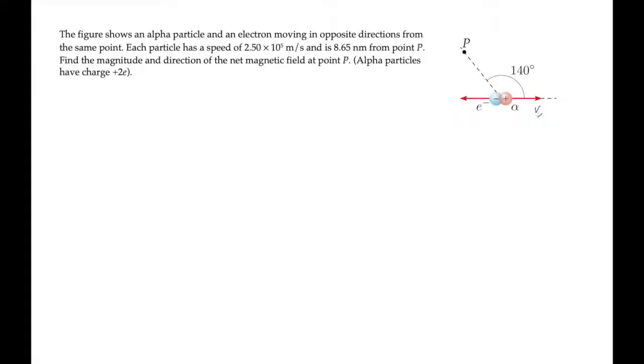The alpha particle and the electron in this problem are traveling with the same speed in opposite directions. They're both the same distance r from the point p, where we're asked to find the magnetic field, magnitude, and direction.